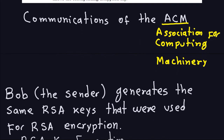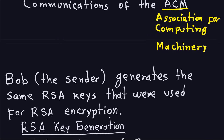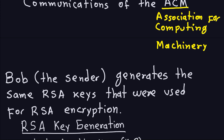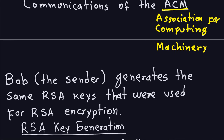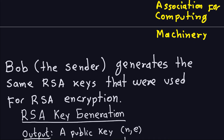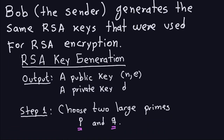The first thing we have to do — if you remember when you perform a digital signature — is that the sender has to do the setup. The sender has to decide on a public key and a private key. He can sign documents or messages with the private key, and the public key is used to verify that the signature is actually coming from Bob. Bob, as the sender, generates the same RSA keys that were used for RSA encryption.